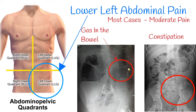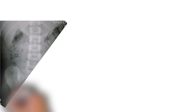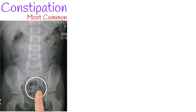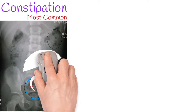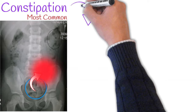The first and most common cause of left abdominal pain is constipation. Constipation occurs when a person finds it hard to pass a stool or has less than regular bowel movements. When stool moves slowly or cannot be eliminated from the rectum, it causes pain in the colon located in the lower left abdomen.